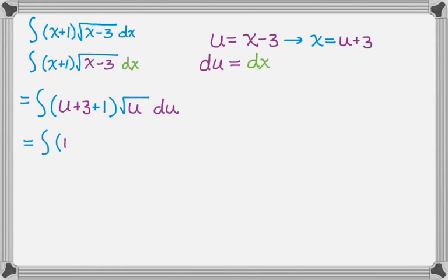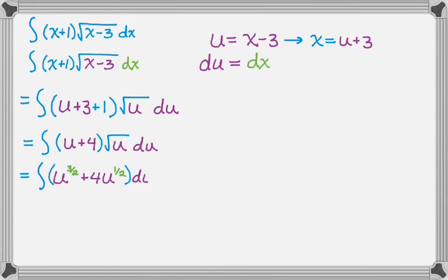Simplifying: u plus 4 times radical u du. I'm going to distribute, so it becomes the integral of u to the 3/2 plus 4u to the 1/2 — remember, you don't want radicals when doing an antiderivative, use rational exponents. Applying the reverse power rule: add 1 to each exponent and multiply by the reciprocal. 3/2 plus 1 is 5/2, reciprocal is 2/5, giving 2/5 u to the 5/2. Then 1/2 plus 1 is 3/2, reciprocal is 2/3, giving plus 4 times 2/3 u to the 3/2, plus c.